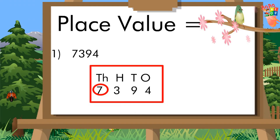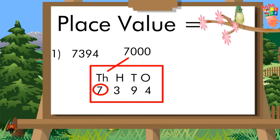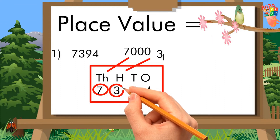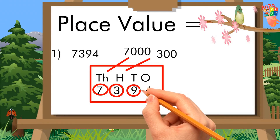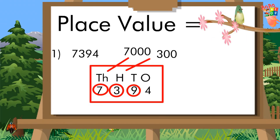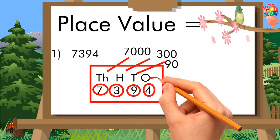The place value of 7 is 7 multiplied by 1000, which equals 7000 — thousands place. The place value of 3 is 3 multiplied by 100, which equals 300 — hundreds place. The place value of 9 is 9 multiplied by 10, which equals 90 — tens place.